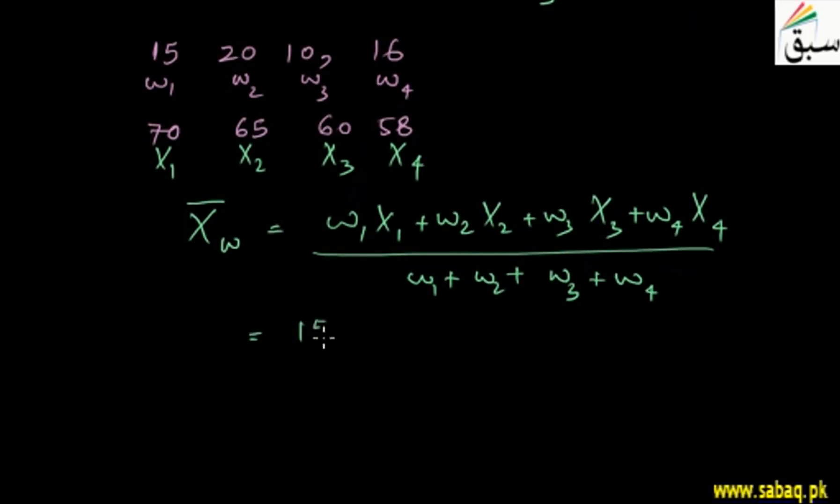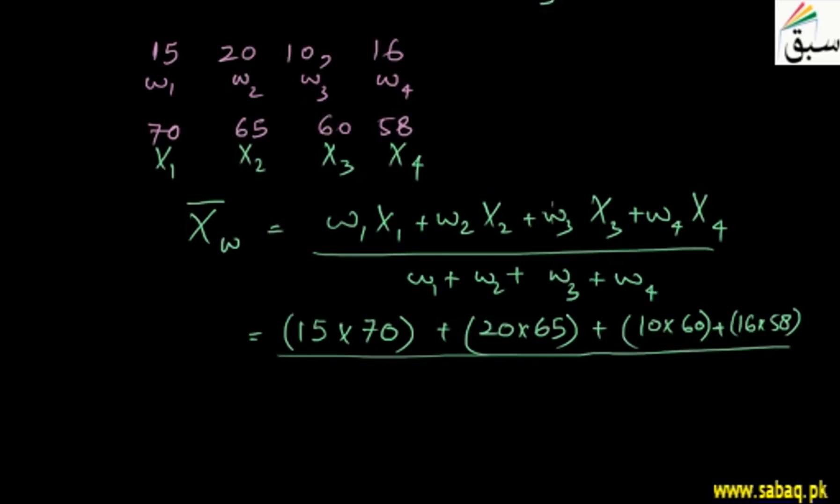That equals 15 times 70 plus 20 times 65 plus 10 times 60 plus 16 times 58 divided by 15 plus 20 plus 10 plus 16. If you simplify then 3878 divided by 61, which is 63.57.